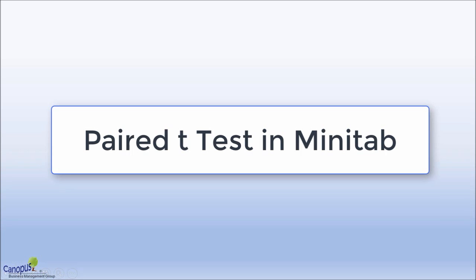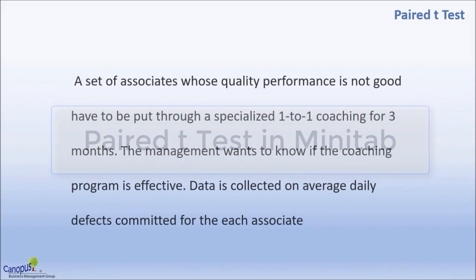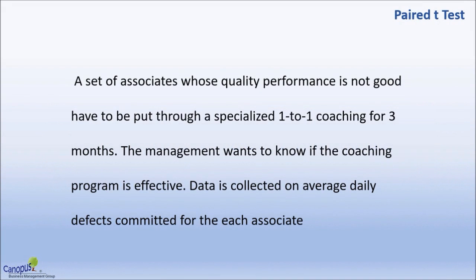In this lecture, we are going to talk about the third type of hypothesis test, the third type of t-test, which is called a paired t-test. We talked about an example in the earlier lecture where we talked about the different types of t-tests. Now we will take a practical scenario.